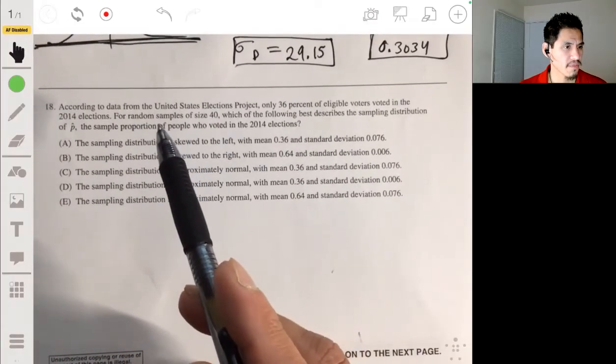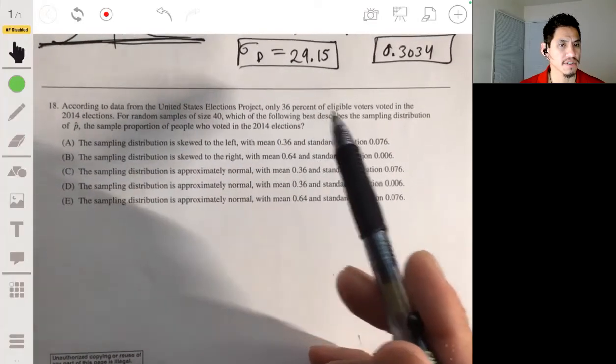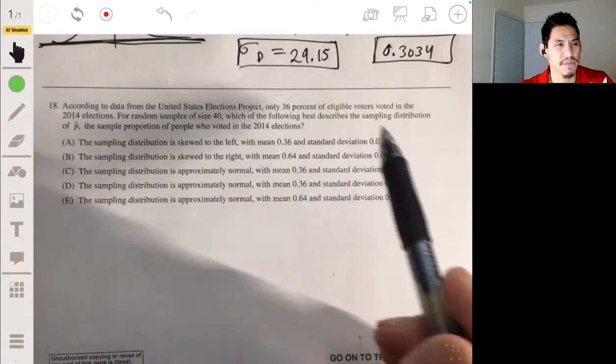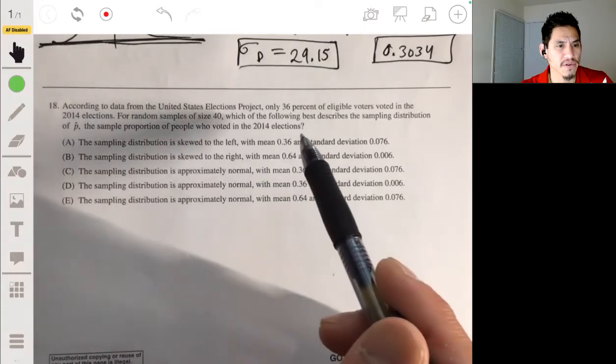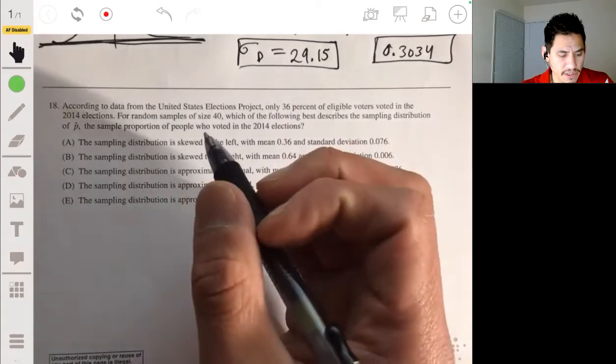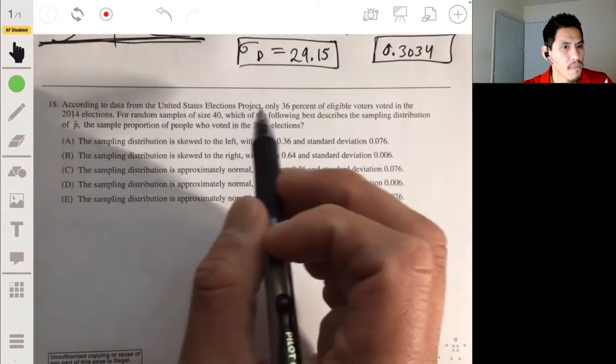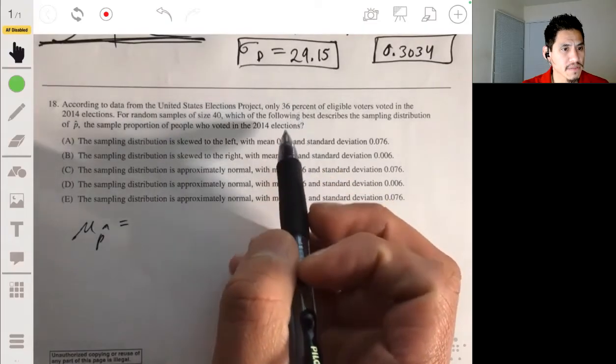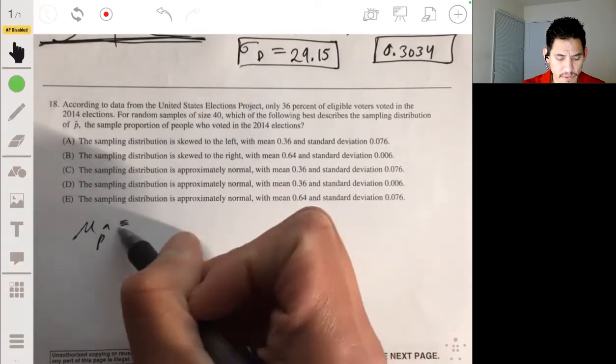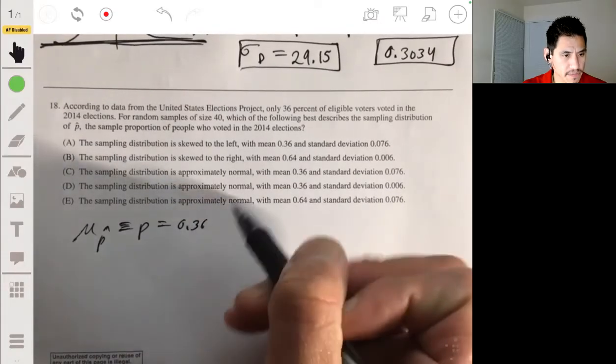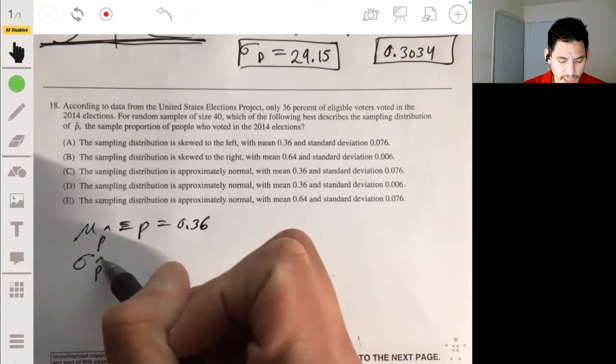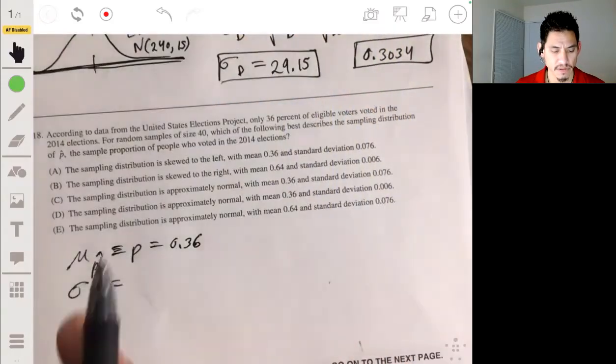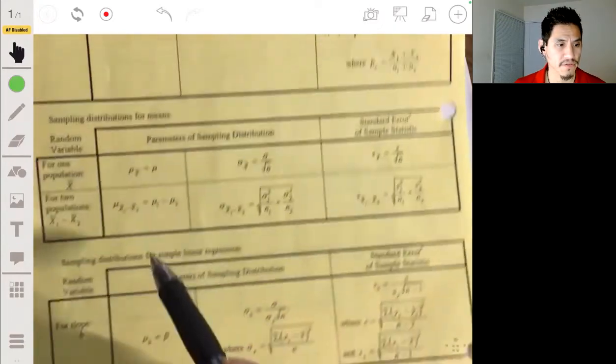Alright, so 18. According to the data from the United States Elections Project, only 36 percent of eligible voters voted in the 2014 elections. For random samples of size 40, which of the following best describes the sampling distribution of p-hat, the sample proportion of people who voted in 2014 elections? Okay, so the sampling distribution of p-hat. The mean of p-hat will be equal to the population proportion, which will be 0.36. And the standard deviation of p-hat, again, we can use our formula sheet. And we look at sampling distribution for proportions.